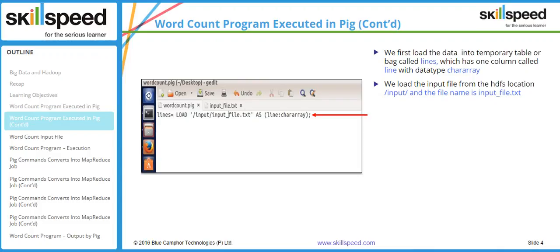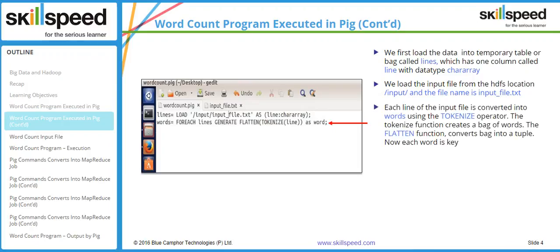So the first line loads the input file as chararray and creates a relation called 'lines'. In the second line, I am creating another relation called 'words'. Each line of the input file is converted into words using the TOKENIZE operator. The TOKENIZE function creates a bag of words, and the FLATTEN function converts a bag into a tuple. Using the FOREACH operator, I am tokenizing each line and then flattening it, saving the result as the relation 'words'.